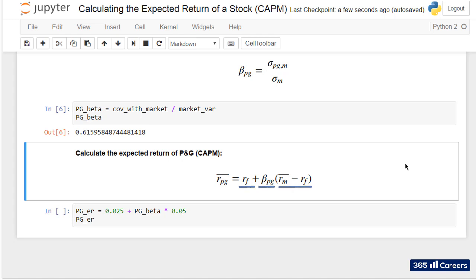Let's work the expression. The expected return of the stock I am interested in, P&G, will differ from the risk-free rate with an amount equal to the product of its beta and the risk premium.